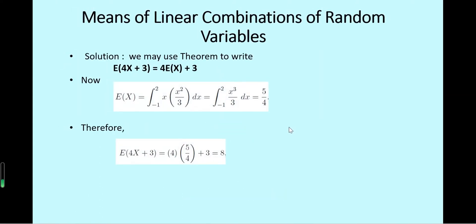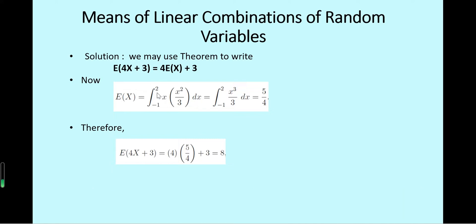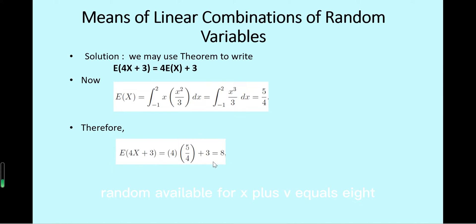The solution is: from the theorem, we write E(4x plus 3) equals 4 times E(x) plus 3. E(x) is calculated as the integral of x times the density from minus 1 to 2, giving E(x) = 5/4. Filling this in, we get E(4x plus 3) equals 8.